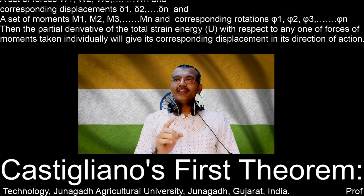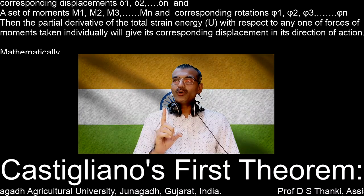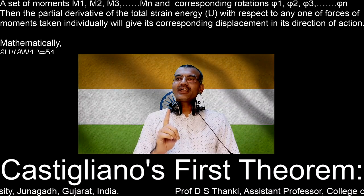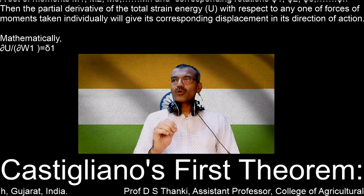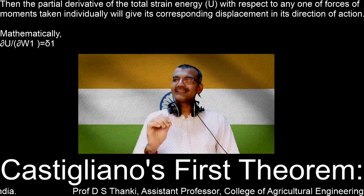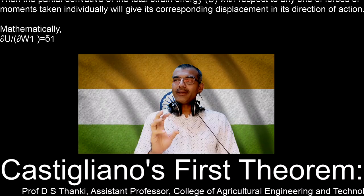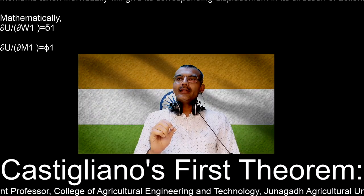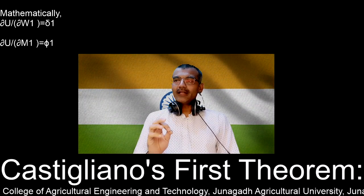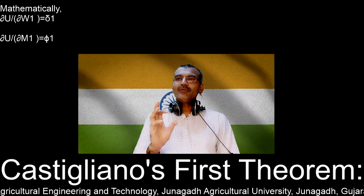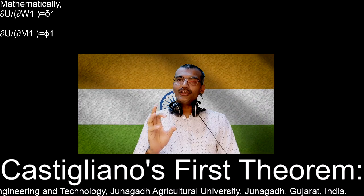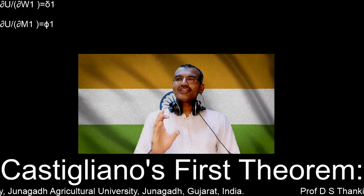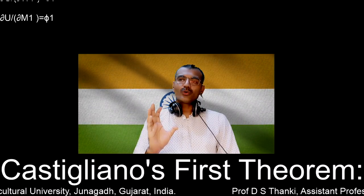then the partial derivative of total strain energy U with respect to any one of the forces or moments, taken individually, will give its corresponding displacement or rotation in its direction of action. Mathematically, dU/dW1 gives delta 1, and dU/dM1 gives phi 1. So differentiating U with respect to a force gives deflection, and differentiating U with respect to a moment gives rotation phi.